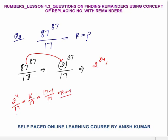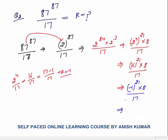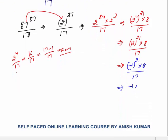I write 2^87 as 2^84 × 2^3 ÷ 17, which becomes (2^4)^21 × 8 ÷ 17, or equivalently 16^21 × 8 ÷ 17. Replacing 16 with its remainder −1, this becomes (−1)^21 × 8 ÷ 17. Since −1 to an odd power is −1, we get −1 × 8 = −8. The remainder is −8, and since positive remainder = divisor − |negative remainder| = 17 − 8 = 9, the final answer is 9.